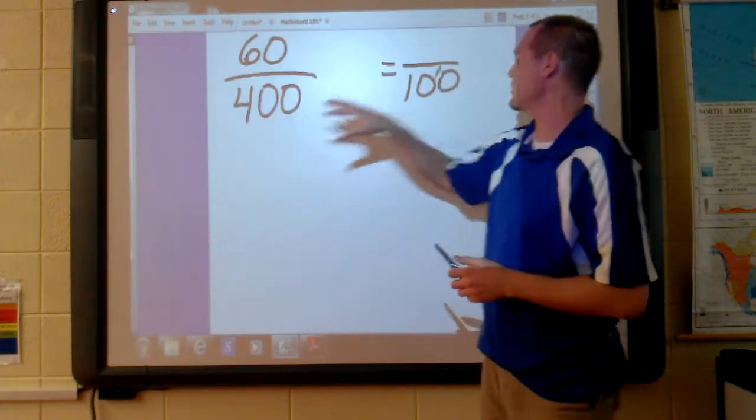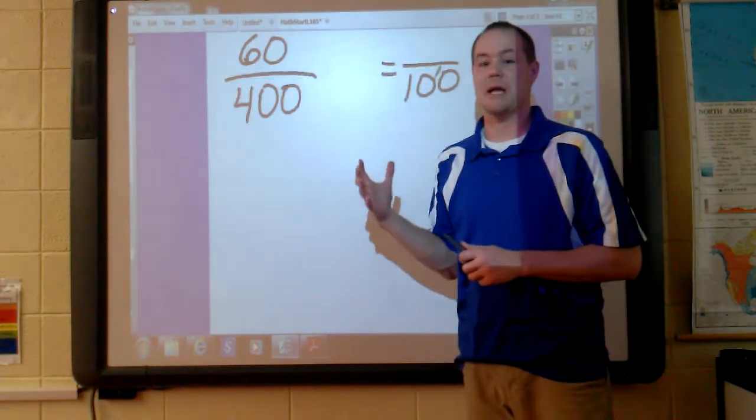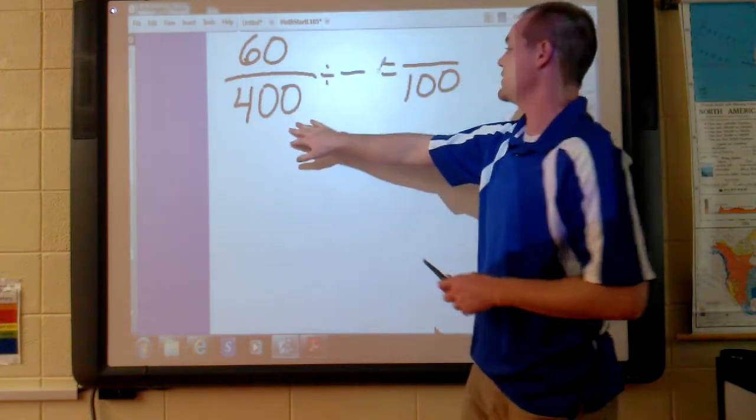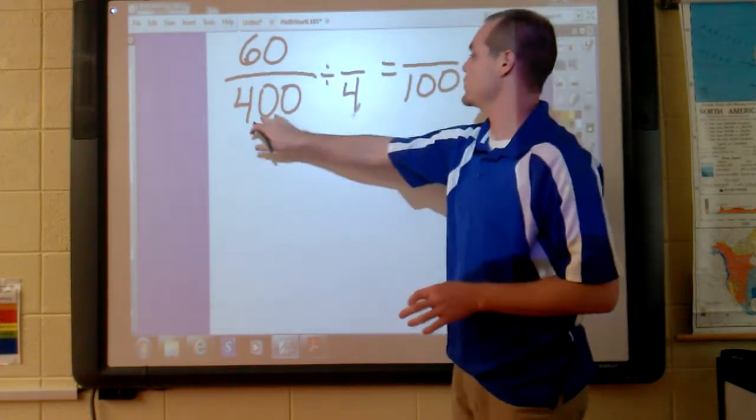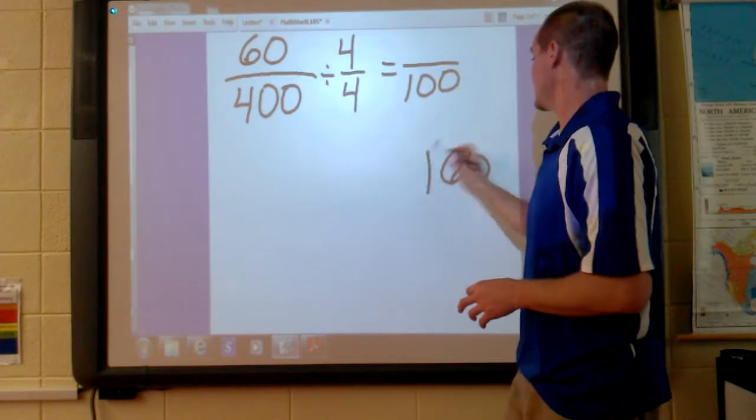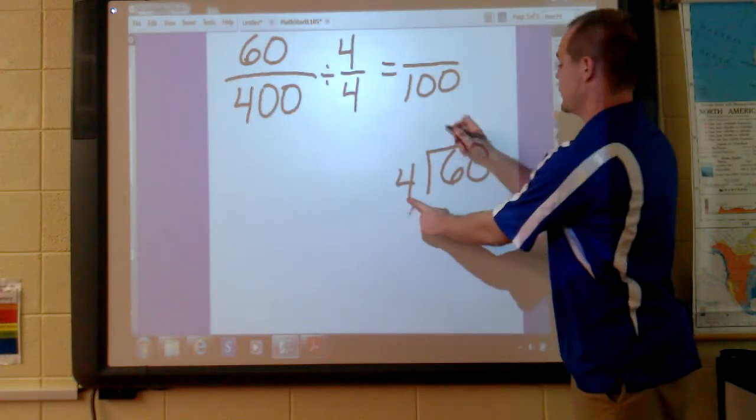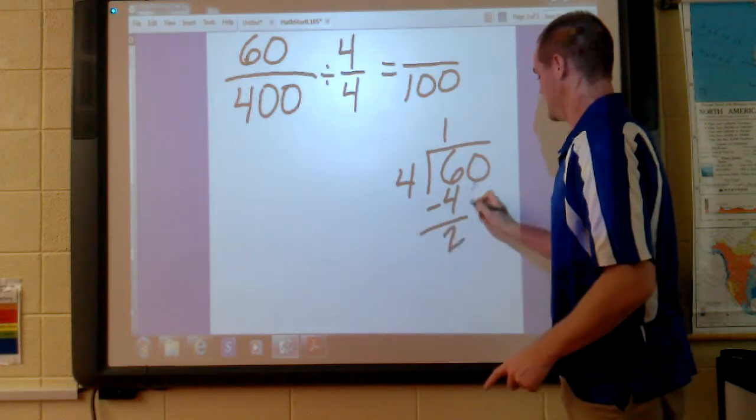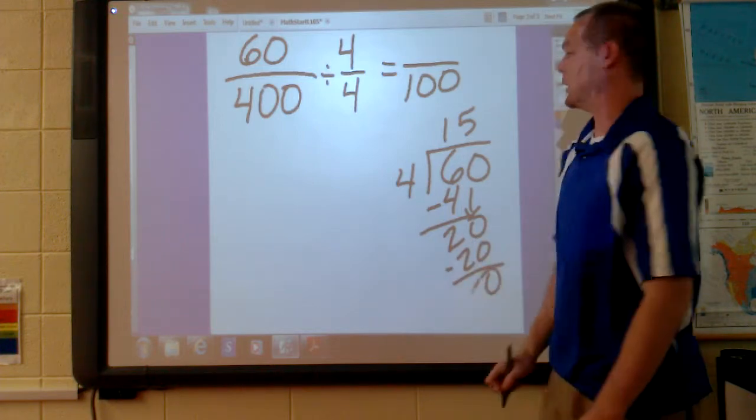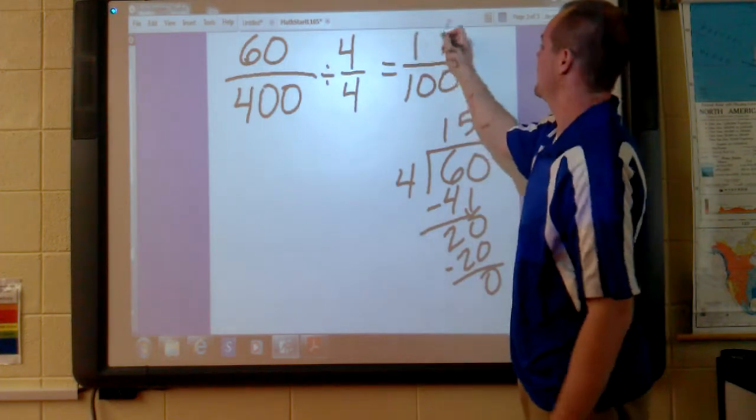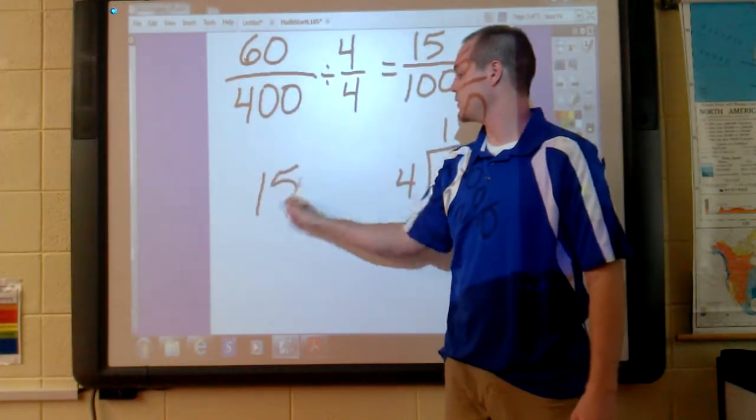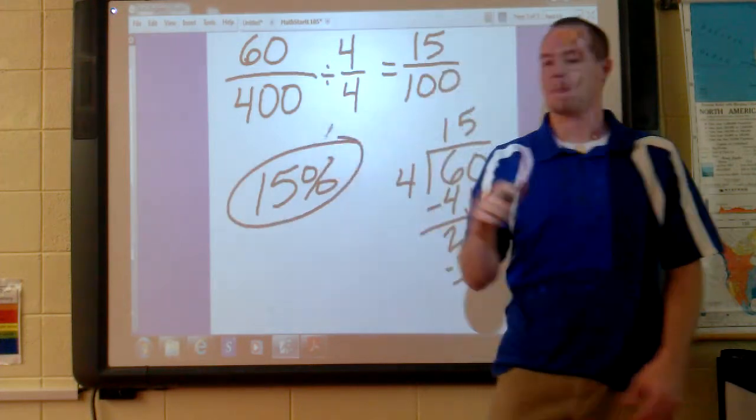Now, 400 is greater than 100, so instead of multiplying by a fraction equal to 1, we need to divide by a fraction equal to 1. And 400, if we divided it by 4, 400 divided by 4 would be 100. This fraction needs to be equal to 1. Now, off to the side, I'm going to divide 60 by 4. 4 goes into 6 once. 4 goes into 20 five times. And I have no remainder. So my answer is 15. What percent of these 400 beads were red? We know now that it's 15%. That's example two.